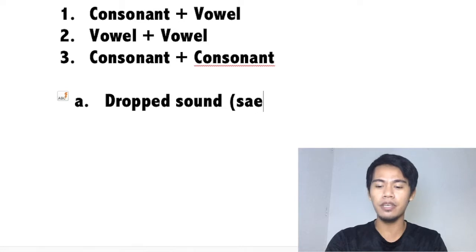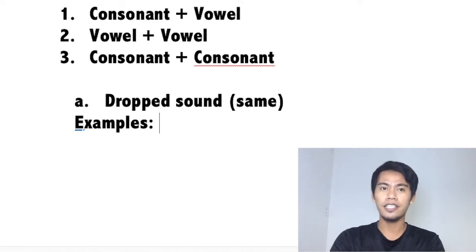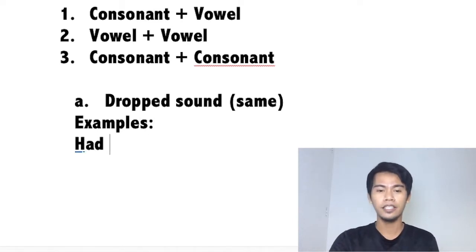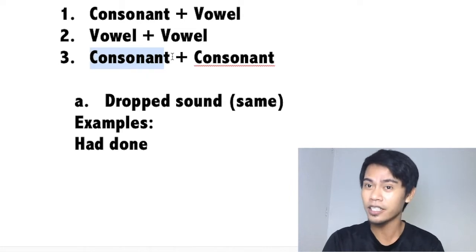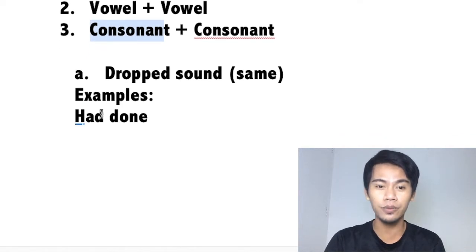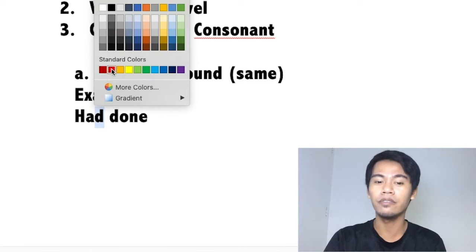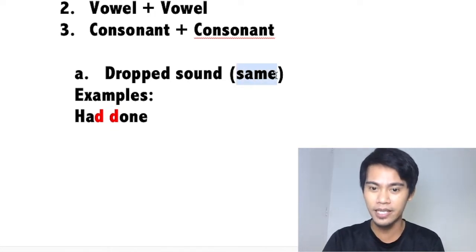In your dropped sounds, the last sound of the first word and the first sound of the next word should be the same. Let me give you examples. Example number one: we have 'had done.' First, check whether the last sound of the first word is a consonant and the first sound of the next word is also a consonant. The last sound of 'had' is the D sound — consonant. The first sound of 'done' is also the D sound. That's what I mean when I say same — the last sound and the first sound are the same.